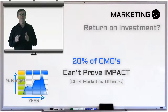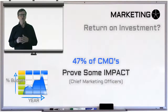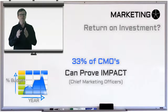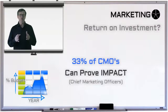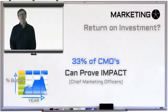A further 47% of CMOs can only prove some qualitative impact — in other words, it can't be quantified. And just 33% of CMOs said they can prove the quantitative impact of marketing. That's interesting indeed. CMO, by the way, means Chief Marketing Officer — the highest-level marketing person in a corporation or company.